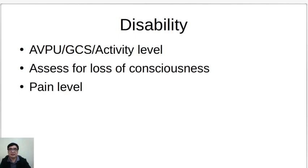Disability is assessed using your AVPU scale — alert, verbal, and unresponsive — your Glasgow Coma Scale, and your activity level. Please assess your patients for any loss or derangement of consciousness, as well as the patient's pain level.